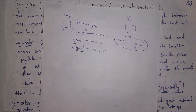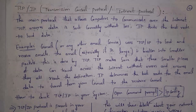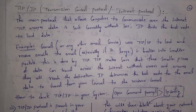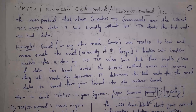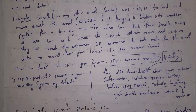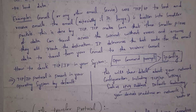TCP/IP protocol comes by default with your operating system. If you want to check it on your computer, open the command prompt and type 'ipconfig', where ipconfig stands for Internet Protocol Configuration. It will show complete details regarding the TCP/IP protocol.